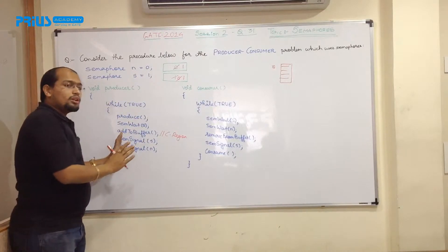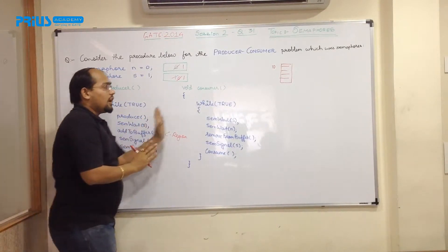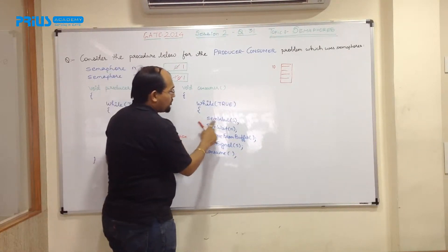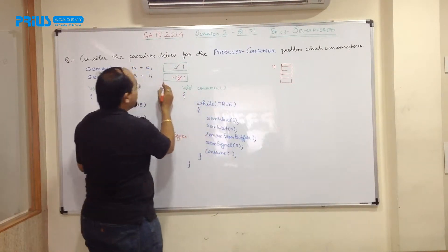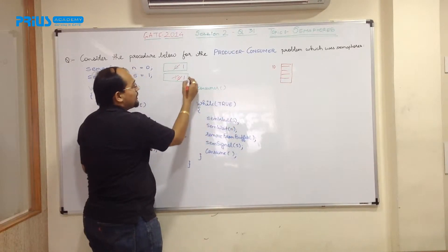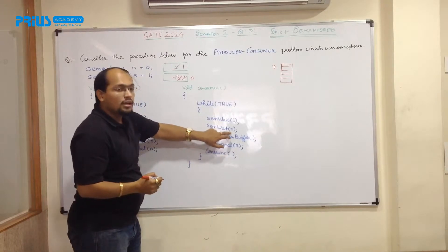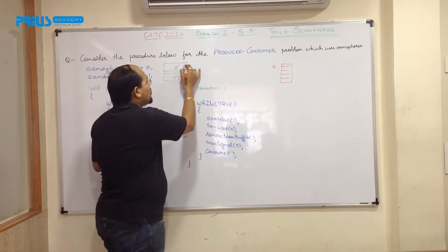Now assuming that producer has executed once and now consumer is executing. Again, this is an inter-process communication kind of problem. So now semaphore wait S. Wait S means this S will be decremented by 1. So it becomes 0. Semaphore wait N, it will be again decremented by 1. So it will become 0.